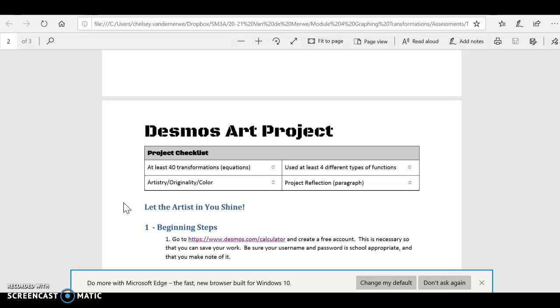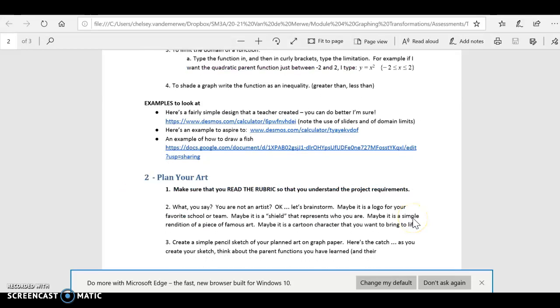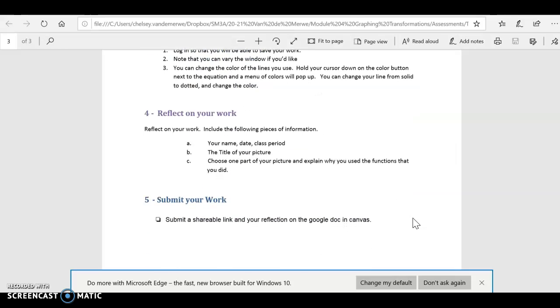Again you need to make sure that you use at least four different kinds of functions and then the last thing is the project reflection. If you just come down here your reflection is just, it should be really short. You don't have to write more than like three sentences. Write your name, date, class period, write the name of your picture.